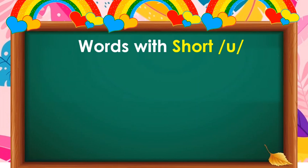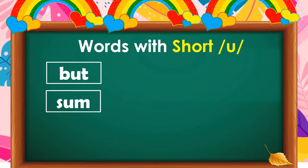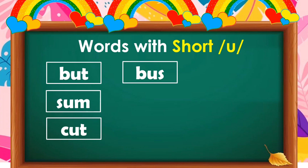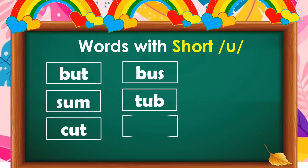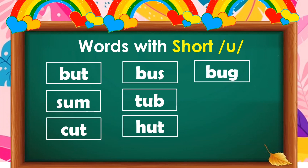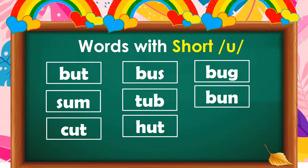Words with short U or the U sound: bought, some, cut, bus, top, hot, bug, bond, cup.